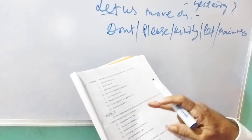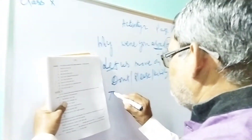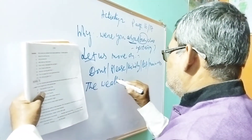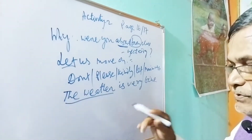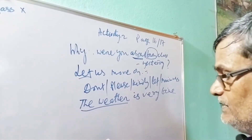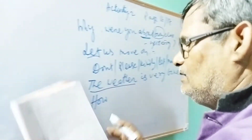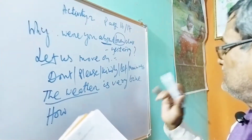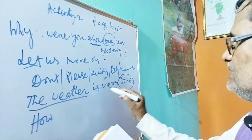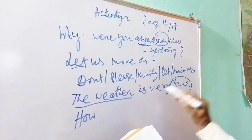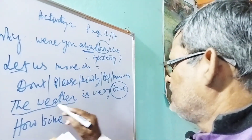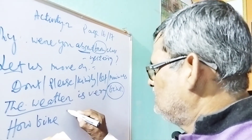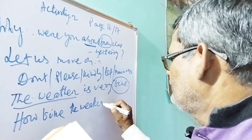Exercise 3: convert the declared sentence into an exclamatory sentence using 'how.' The first one: 'The weather is very fine' — ends with full stop, begins with subject, so it is declarative. When asked to turn this into an exclamatory sentence, simply write 'How.' Then find the adjective — go to the last word after 'very,' which is 'fine.' Bring it near: 'How fine the weather is!' That is the answer.